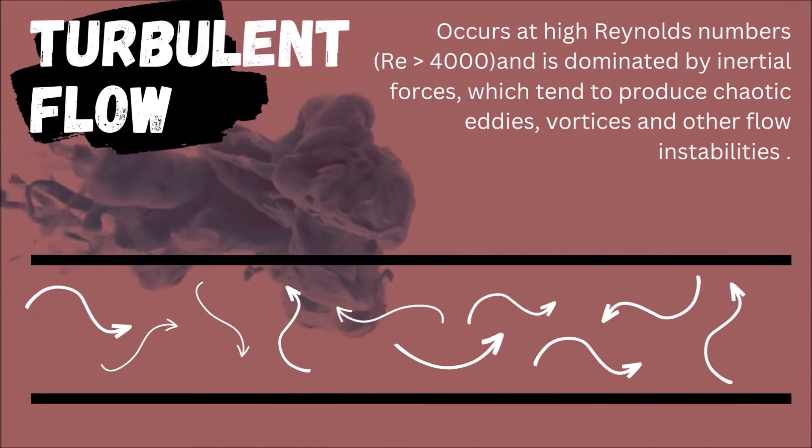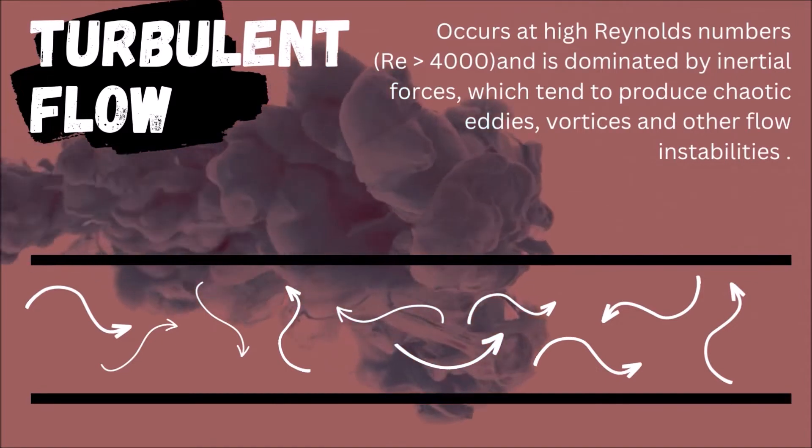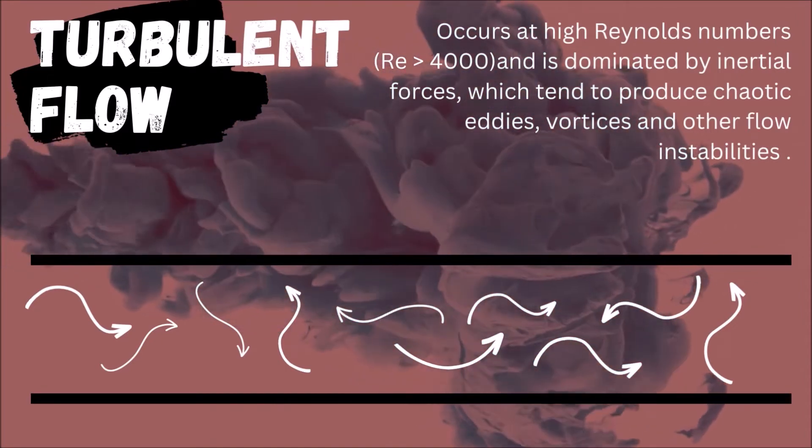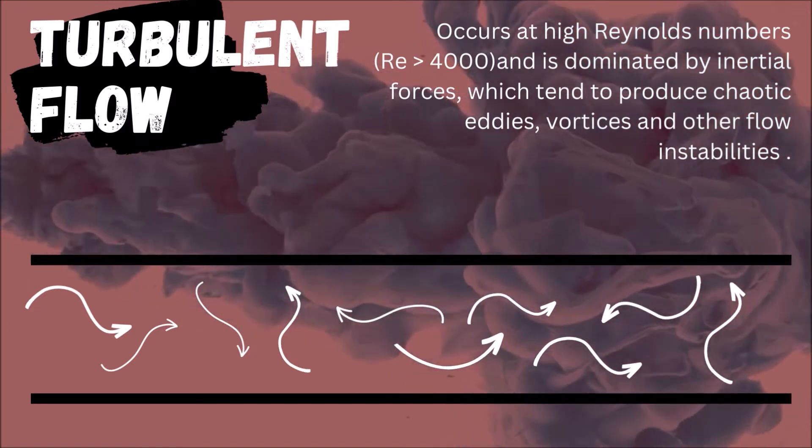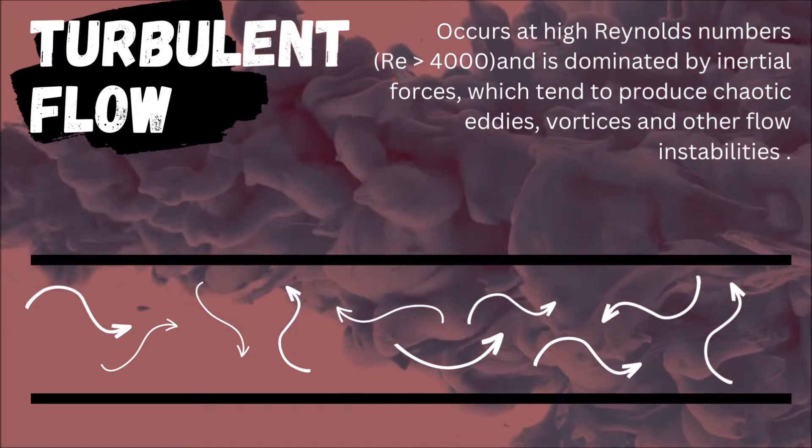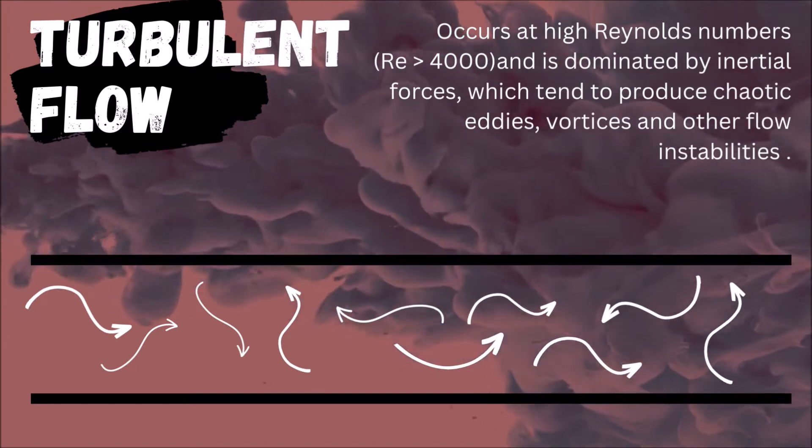And this is turbulent flow. It occurs at higher Reynolds numbers with more than 4000, and is dominated by inertial forces, which tend to produce chaotic eddies, vortices and other flow instabilities.